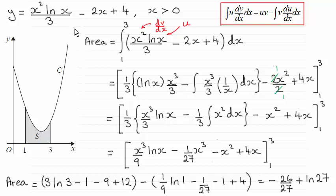To get this answer, all we need to do is integrate y with respect to x between the limits x equals 1 and x equals 3. For this first term, it's a typical integration by parts integral, so I've pulled out a third out the front of this bracket here.